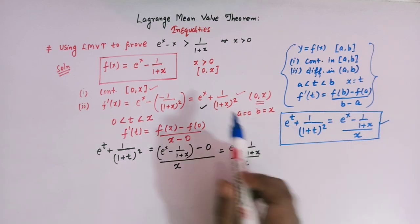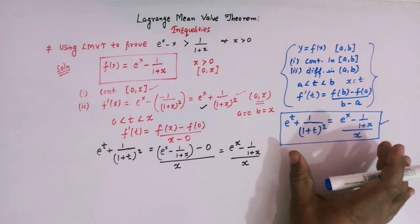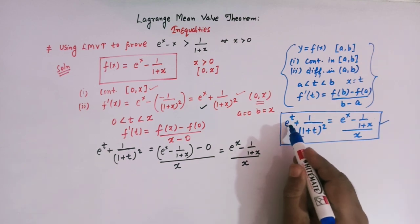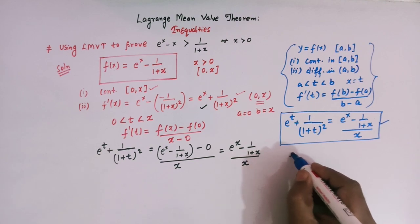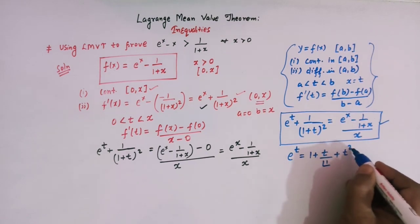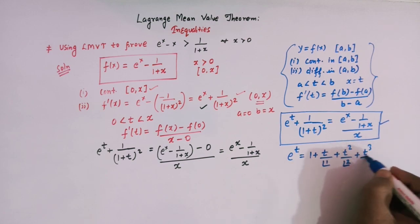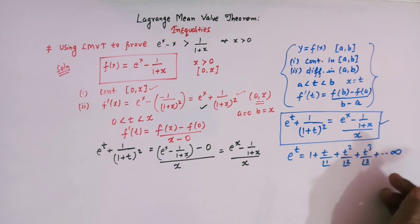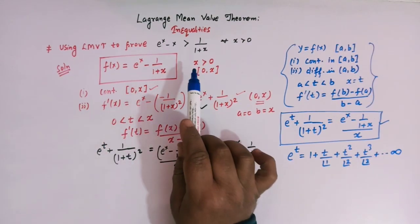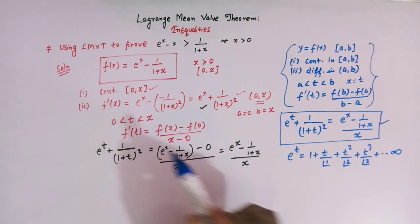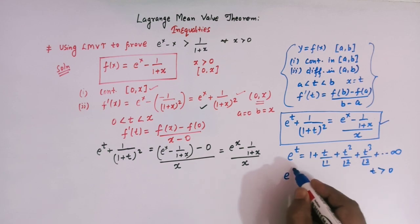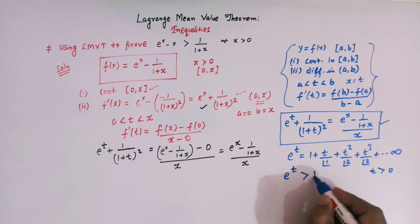To proceed, we use one important result associated with the exponential function. We know that e^t = 1 + t/1! + t²/2! + t³/3! + ... This is an infinite series. Since t lies between 0 and x, and x is greater than 0, t is also greater than 0. From this series we can conclude that e^t is always greater than 1 when t > 0.